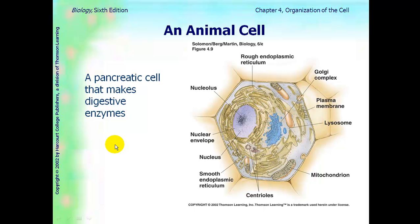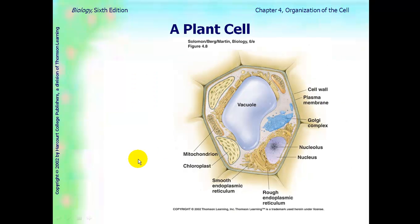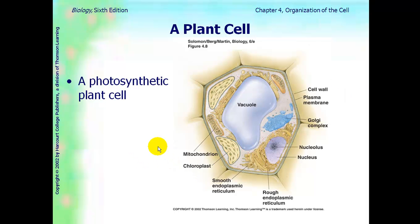Here's a picture of an animal cell — this is actually a cell from the pancreas. We're going to be reviewing a lot of these parts. The basic functions you learned in middle school or regular biology are the same; we are going to go into more detail. And here is your plant cell. We're going to go through the different parts of a plant cell and an animal cell.